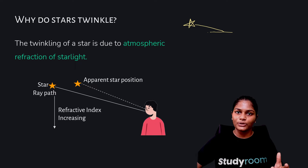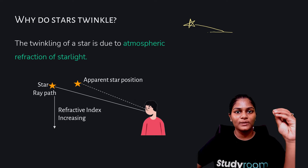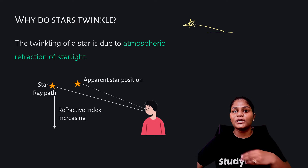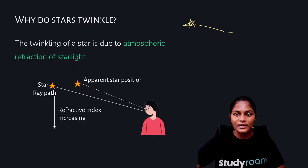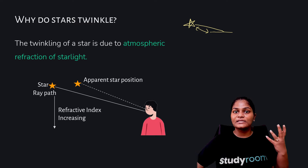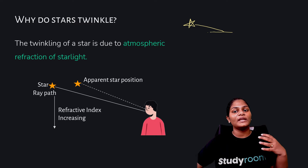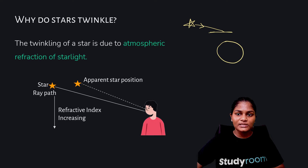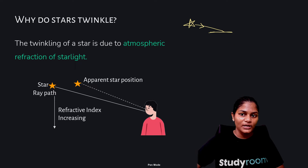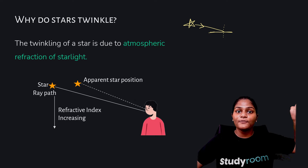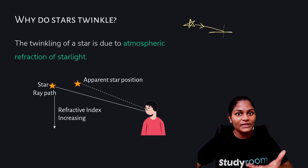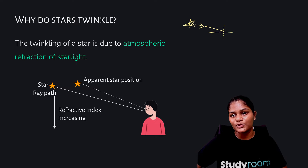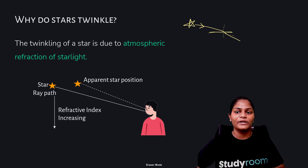To see how refraction takes place, we draw a normal. Space is basically vacuum — there is no air, so there is literally no refractive index for light to bend. The light from the star travels in a straight line until it reaches Earth's atmosphere. Now, because the light is going from vacuum to an atmospheric layer with some density — from a rarer to a denser medium — it bends towards the normal.